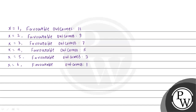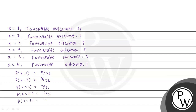So we can find the probability for each value. Probability of X equal to 1: favorable outcome is 11, total outcomes is 36, so P(X=1) = 11/36. Similarly, P(X=2) = 9/36. P(X=3) = 7/36. P(X=4) = 5/36. P(X=5) = 3/36. And the last, P(X=6) = 1/36.